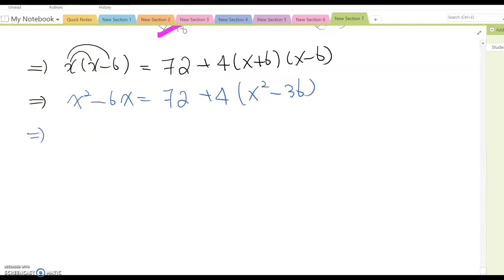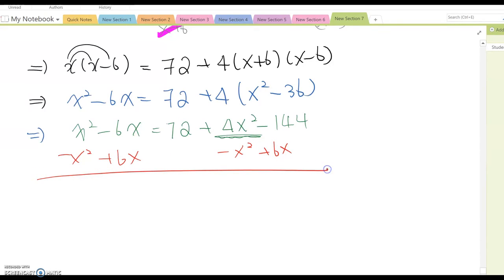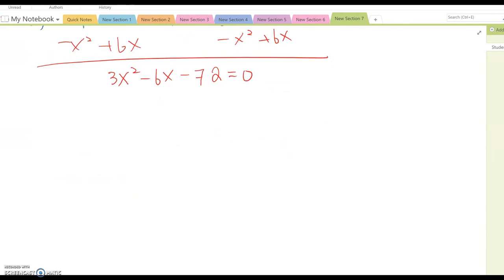Therefore this becomes x squared minus 6x equal to 72 plus 4x squared minus 144. Now I'm going to gather everything to the right side because the higher leading term is on the right side. So minus x squared and plus 6x, then it becomes 3x squared minus 6x minus 72 equal to zero.